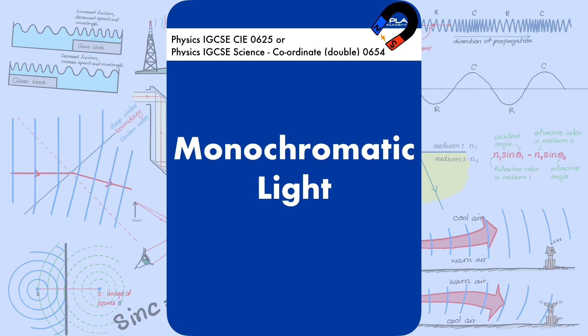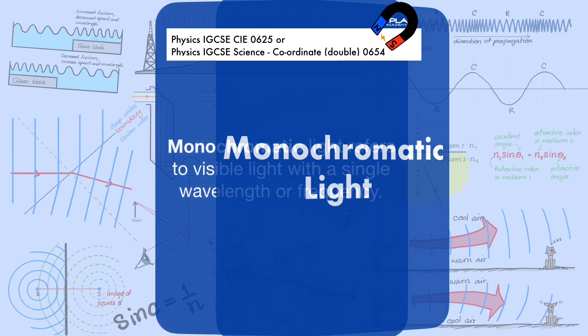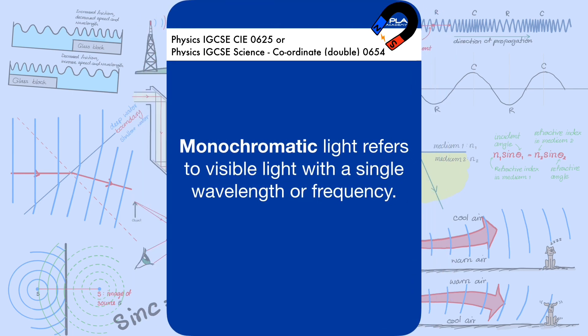Monochromatic light refers to visible light with a single wavelength or frequency.